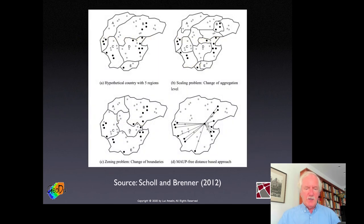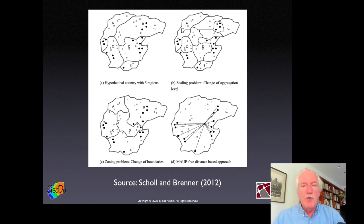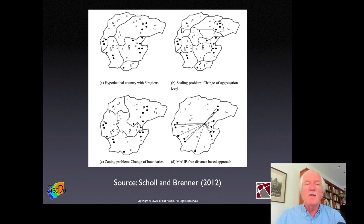MAUP is not just a scale issue — it's also about spatial arrangement, called the zoning problem. In figure A, we have five hypothetical regions with micro units. In B, we have the scaling issue — disaggregating into smaller units. But we can also change the boundaries themselves. MAUP is really a combination of scaling and zoning problems, making it a purely geographical problem. The solution, if possible, is to do the analysis at the individual level.